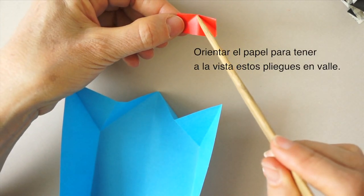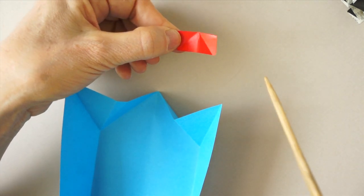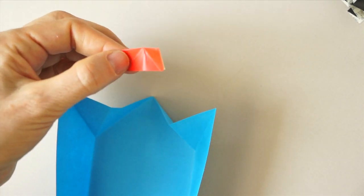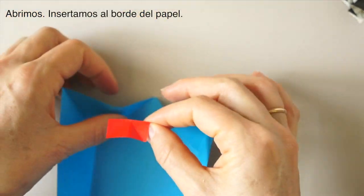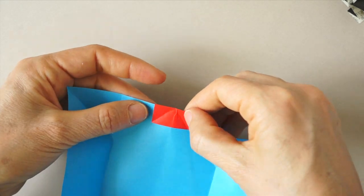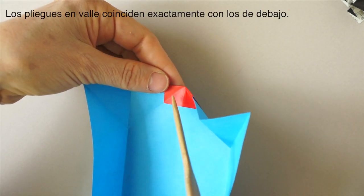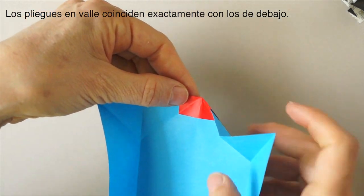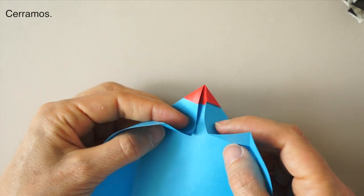So that we can see the valley folds here. Then we open a little bit and we are going to insert it to this edge of the paper so that the valley folds align exactly with the folds underneath. Then we close.